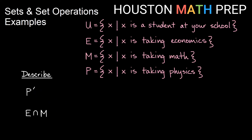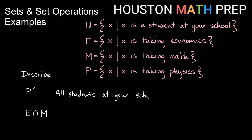So here we have P complement, and we want to describe it. P is the set of all students at your school taking physics. P complement is all of the things in the universal set that are not in set P — so P complement is all students at your school who are not taking physics.